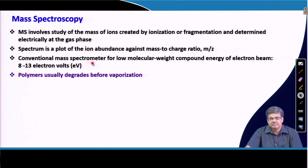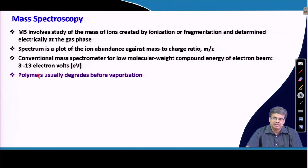Conventional mass spectrometers for low molecular weight compounds use an electron beam energy of about 8 to 13 electron volts. In the case of polymers, if we use this large electron beam to fragment, the polymer might degrade before vaporization, which will complicate the situation further.